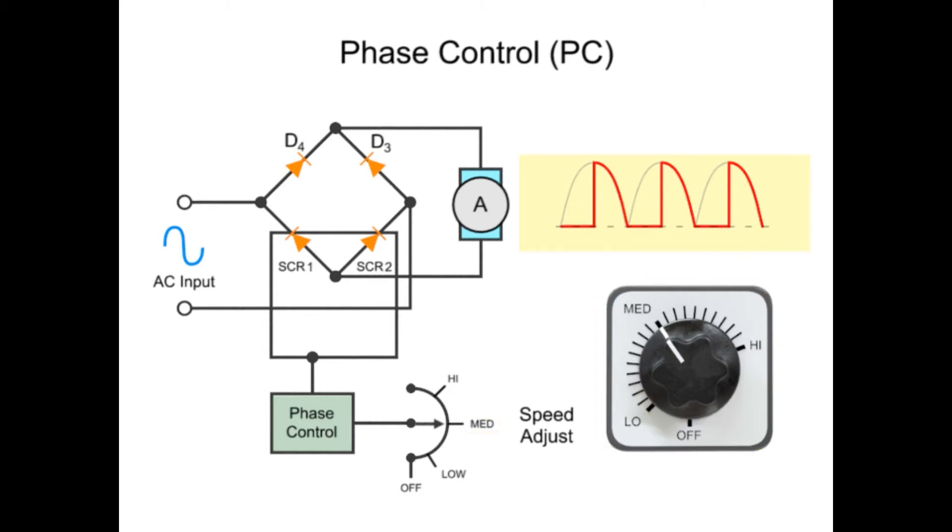Adjusting the speed at the operator controller will determine when the SCR is activated and at what point in the half-wave cycle the wave is turned on or allowed to pass through. The area of the waveform will determine the amount of voltage delivered to the motor.